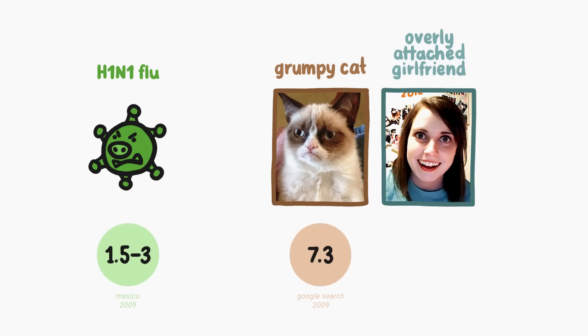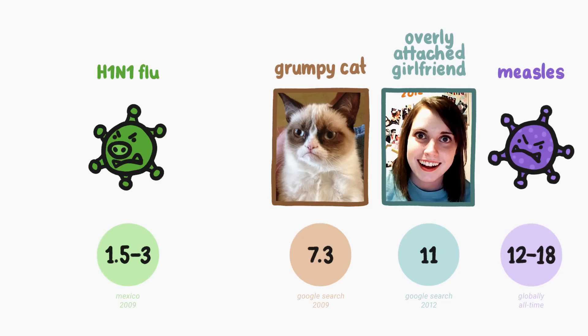In 2012, again based on search data, the overly attached girlfriend meme likely had a basic reproduction rate of around 11. That's only slightly less than measles, possibly the most contagious virus in the world, which has a basic reproduction number between 12 and 18.